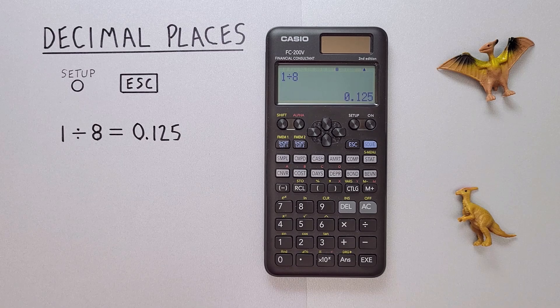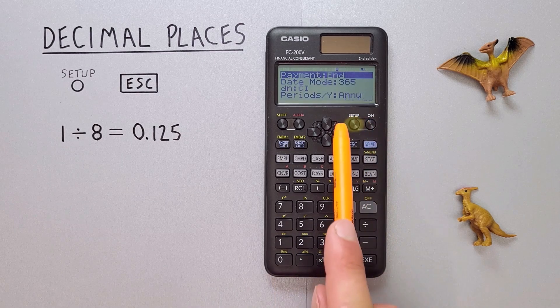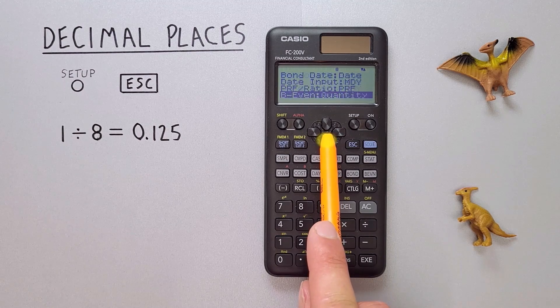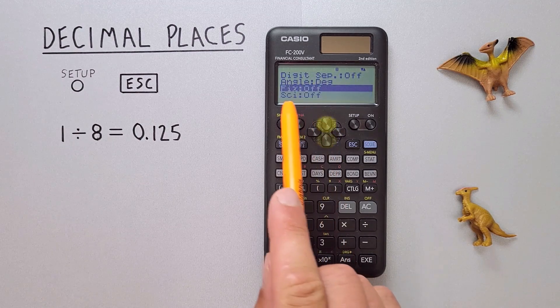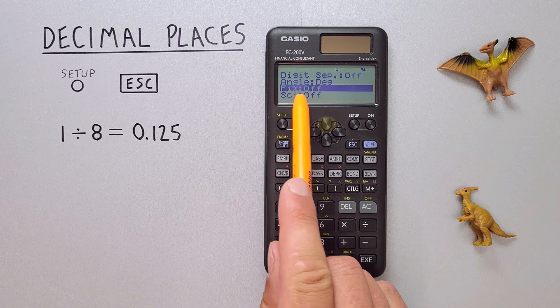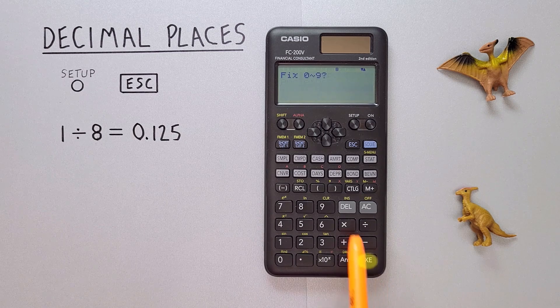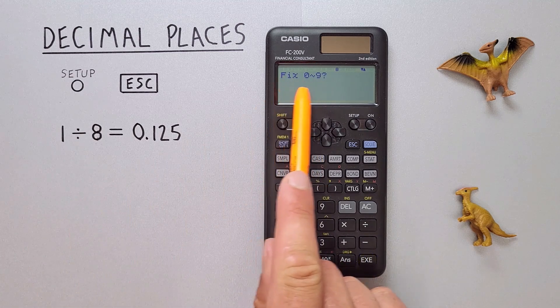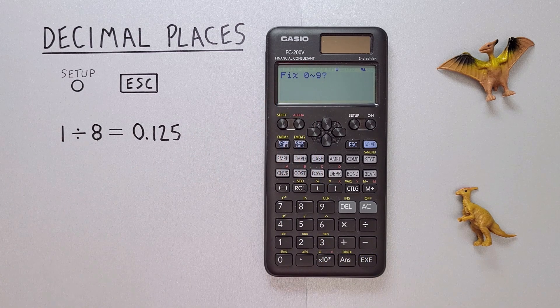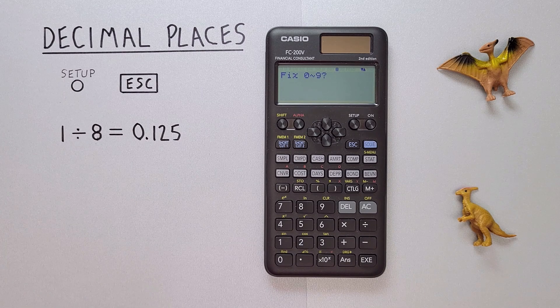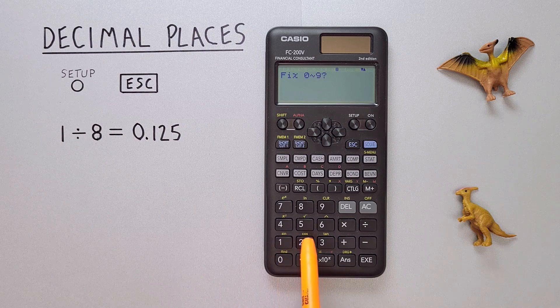To do that we go to the Setup key, scroll down until we see Fix. Normally it should say Off but if we select that it brings us to this menu here where we can set how many decimal places we want to round to. If we want to round it to two decimal places we just press 2.